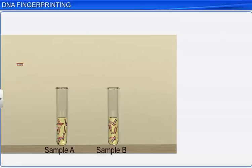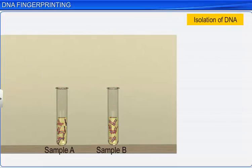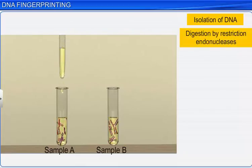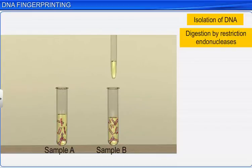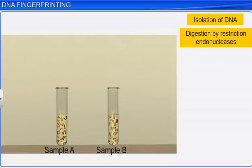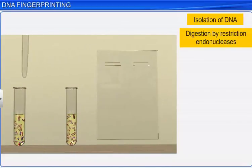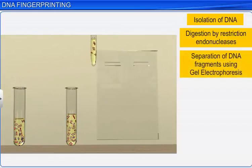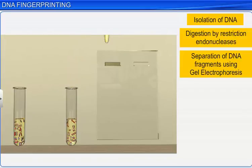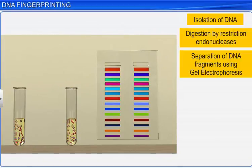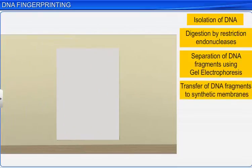Let's now study the steps involved in the DNA fingerprinting technique. First, the DNA is isolated and then digested by restriction endonucleases, which results in DNA fragmentation. Next, these DNA fragments are separated with the help of gel electrophoresis, and then transferred to synthetic membranes like nylon or nitrocellulose.